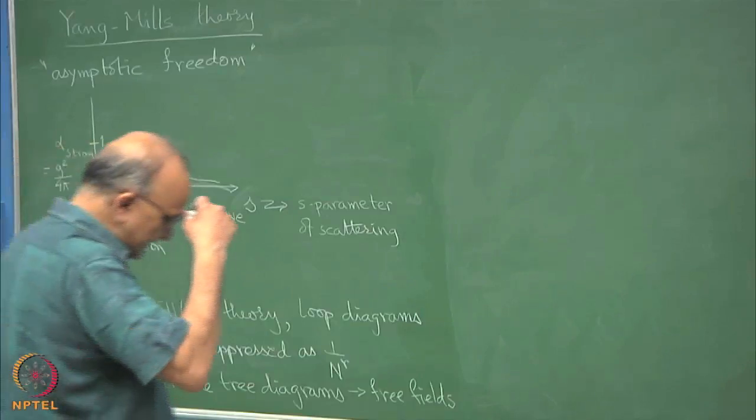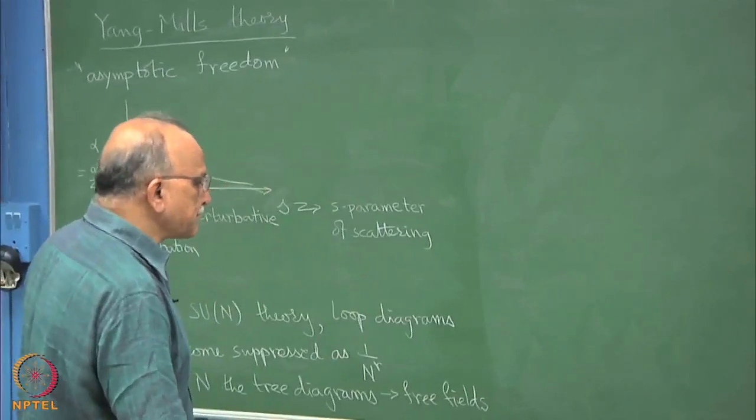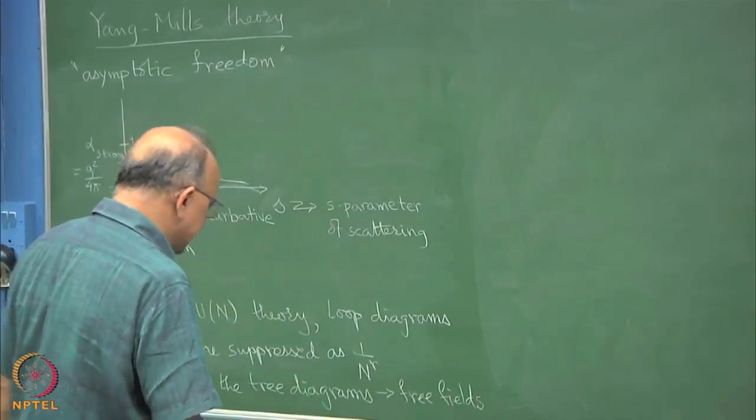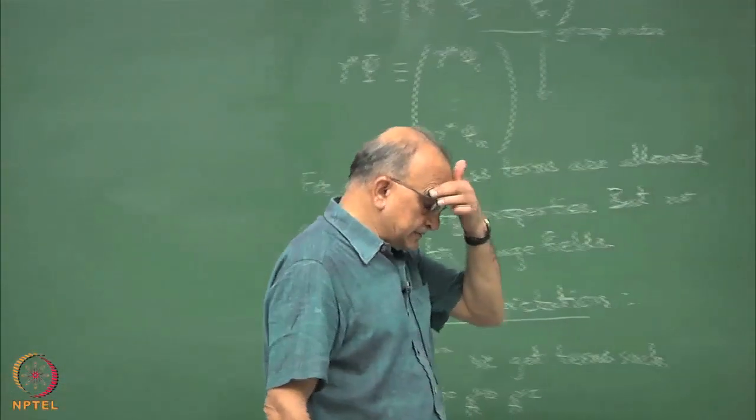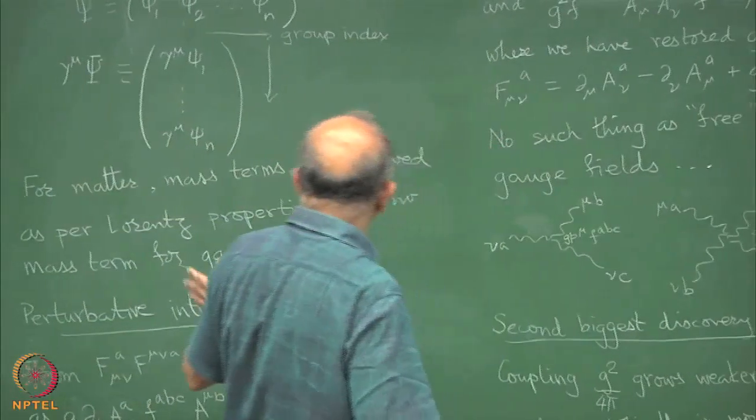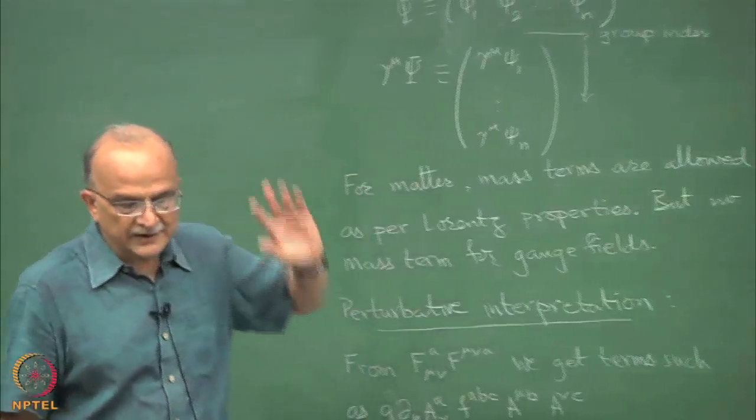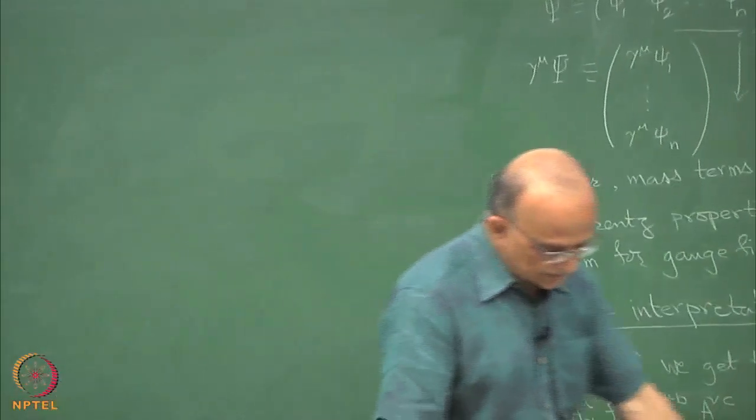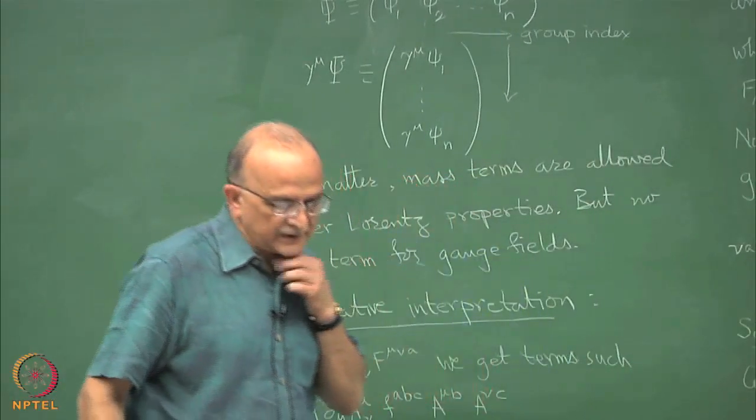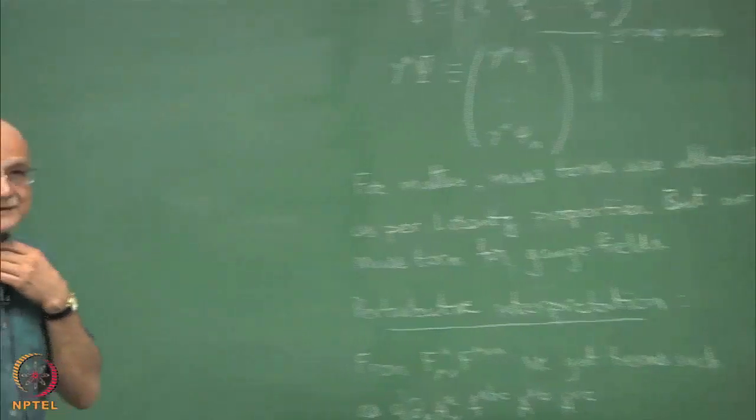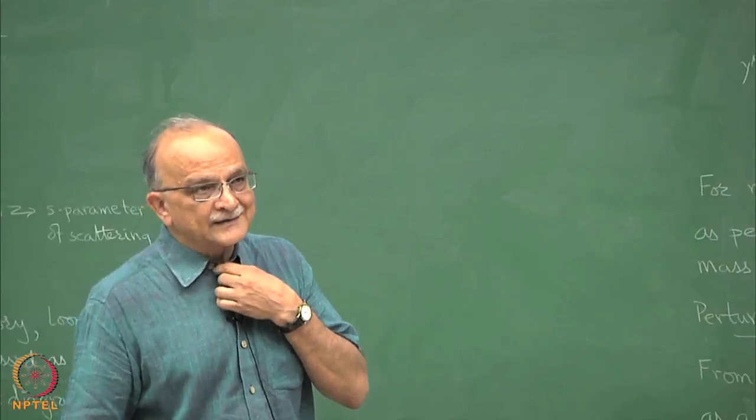SU(n) theory for large n you get free fields. In fact, I think only the planar diagrams survive or something like this. This was an interesting simplification. The reason I am telling you this is that although we have a differential equation from that F mu nu, F mu nu Lagrangian, we can write equations of motion which I did not write. We can write the equations of motion for F but it is meaningless to solve them because there is nothing called a classical Yang-Mills field.